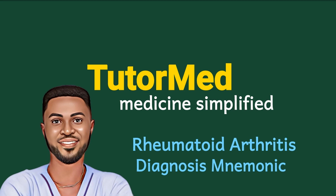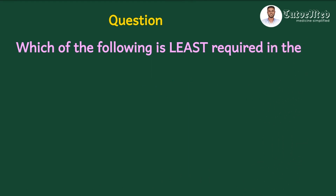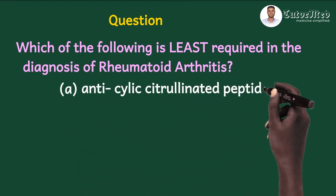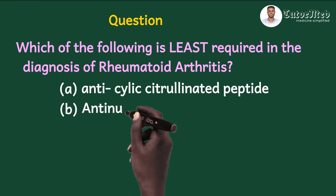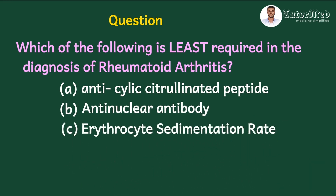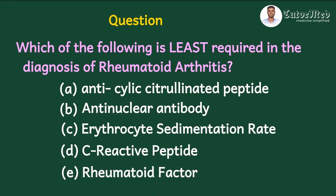Let's begin with this multiple choice question. The question says: which of the following is least required in the diagnosis of rheumatoid arthritis? A: anti-cyclic citrullinated peptide (anti-CCP), B: anti-nuclear antibody (ANA), C: erythrocyte sedimentation rate (ESR), D: C-reactive protein (CRP), E: rheumatoid factor (RF). Which of the following is least required in the diagnosis of rheumatoid arthritis?